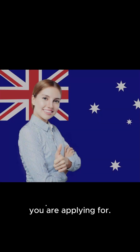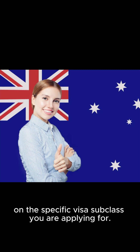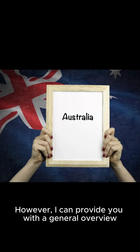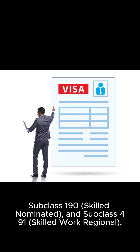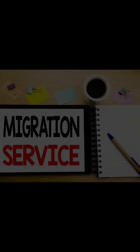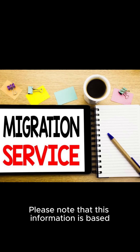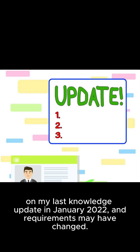Skilled migration visas in Australia can vary depending on the specific visa subclass you are applying for. However, I can provide you with a general overview of the common documentation that is typically required for skilled migration visas such as the subclass 189 Skilled Independent, subclass 190 Skilled Nominated, and subclass 491 Skilled Work Regional. Please note that this information is based on my last knowledge update in January 2022 and requirements may have changed.